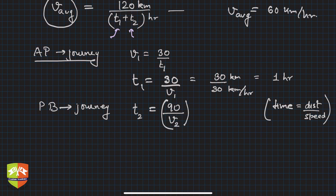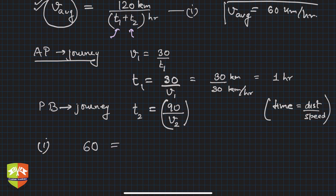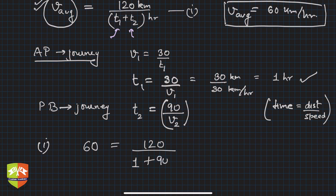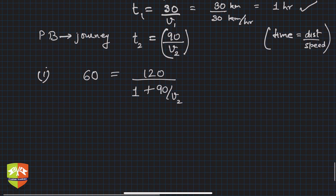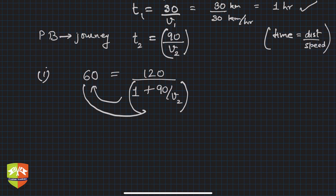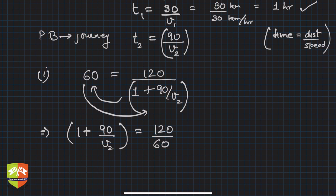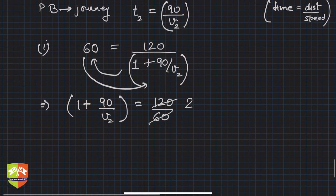Now substituting into equation 1: v_average is 60, so 60 = 120 / (t1 + t2) = 120 / (1 + 90/v2). Cross-multiplying: 1 + 90/v2 = 120/60 = 2. From this point it is only mathematics — no more physics needed.